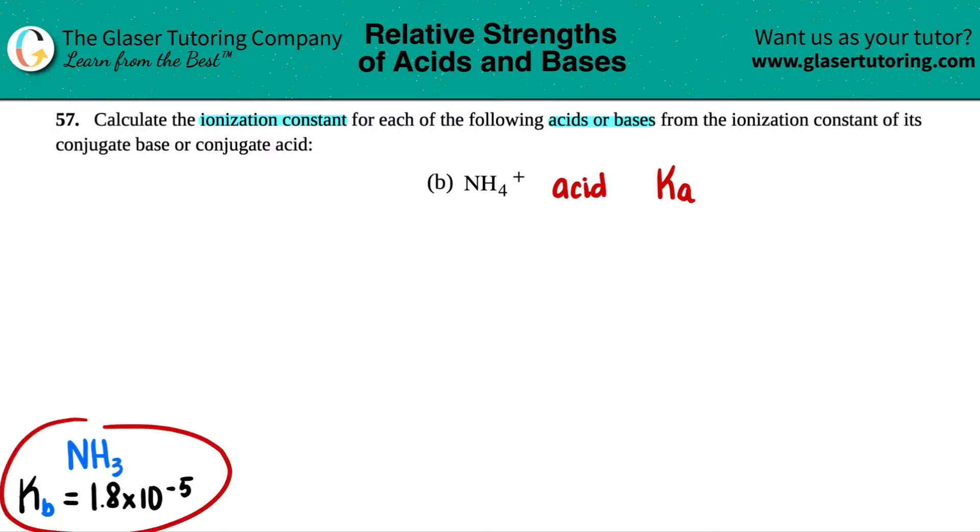So I went to the back of a textbook and I found the conjugate base for NH4 plus. Conjugate bases, remember you drop one of the hydrogens. So this would be NH3. And there's the base value. Kb is 1.8 times 10 to the negative fifth.